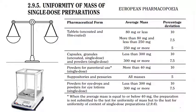For capsule formulations, if the mass is less than 300 mg, the percent deviation is 10%; if it is 300 mg or more, it is 7.5%. For powders for parenteral use with weight more than 40 mg, the limit is 10%. When average mass is equal to or below 40 mg, the preparation is not submitted to the uniformity of mass test but instead to the test for uniformity of content of single dose preparations.